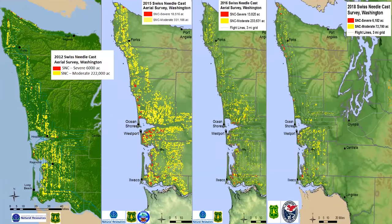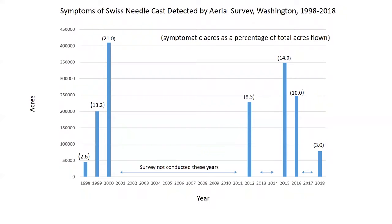In 2012, aerial surveys for Swiss needle cast were resumed. We reached a high point of nearly 350,000 acres symptomatic for Swiss needle cast in 2015. But since that time, we've observed a rather abrupt decline in symptomatic acres. The most recent survey completed in 2018 shows a dramatic reduction to about 78,000 acres symptomatic for Swiss needle cast. In fact, the percent of all acres surveyed in 2018 that were symptomatic is not markedly different from the percent detected in our very first survey back in 1998.